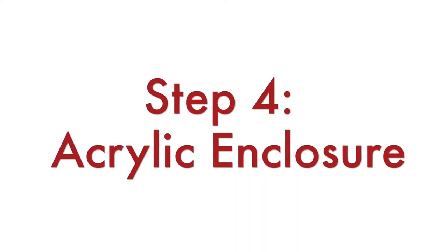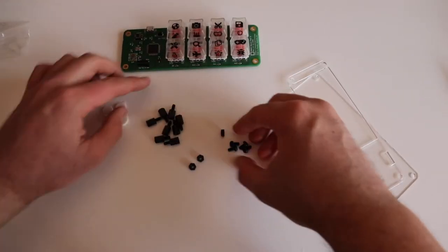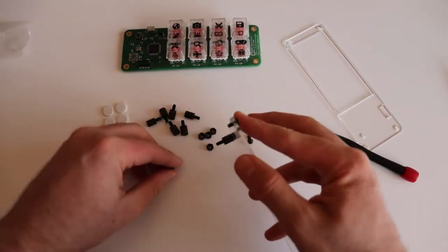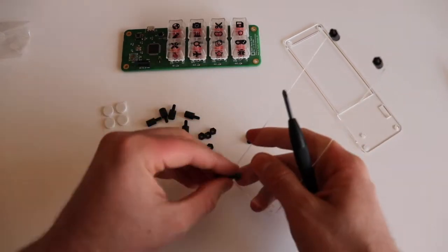Step number 4. Assemble the acrylic enclosure. In the cardboard box you will also find M3 black plastic screws, nuts and standoffs. Although you can assemble them with your bare hands, a screwdriver might be handy.